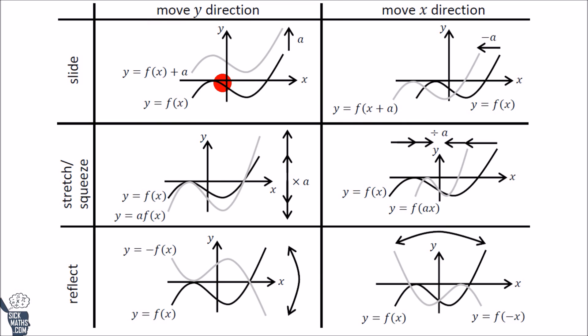In these examples, we call the original graph y equals f(x), which is just a way of saying a graph with some random equation. In the beginning, I'm going to concentrate on just the vertical kinds of transformations, because once you get them, the horizontal stuff is just the opposite.